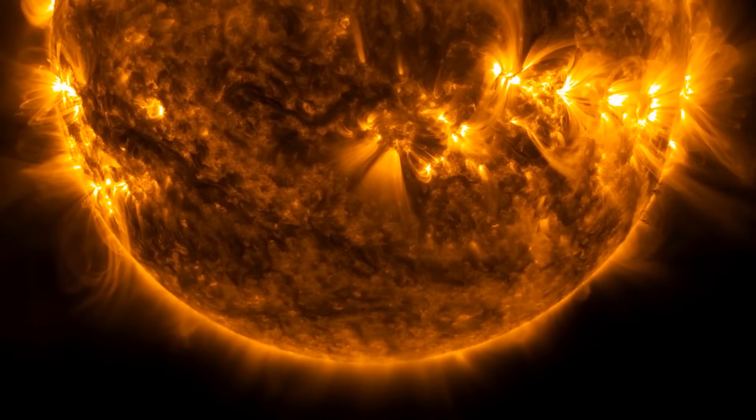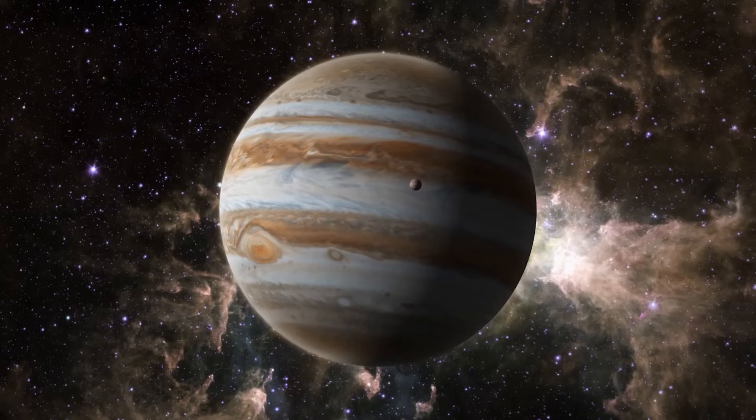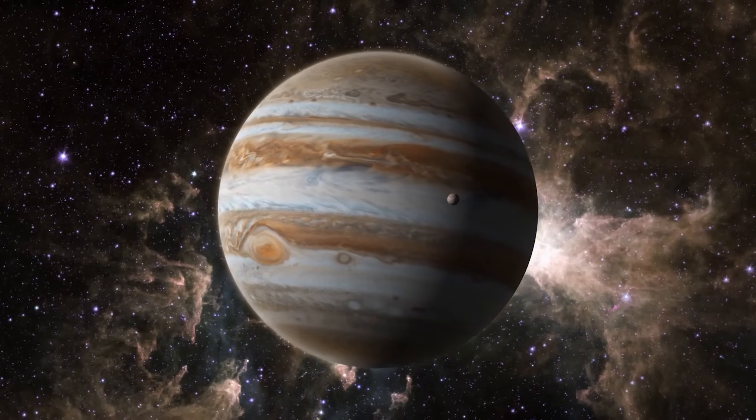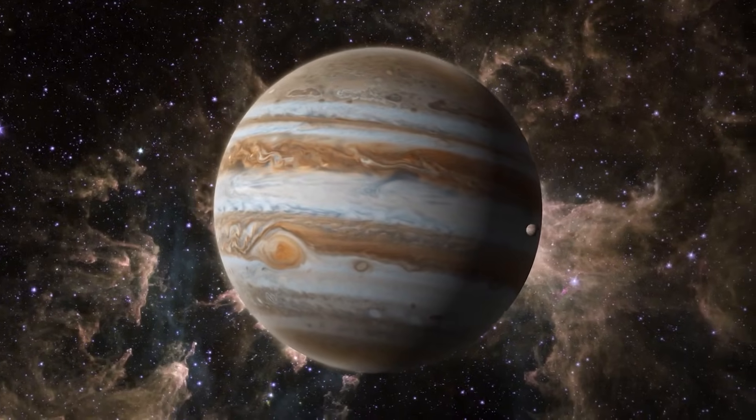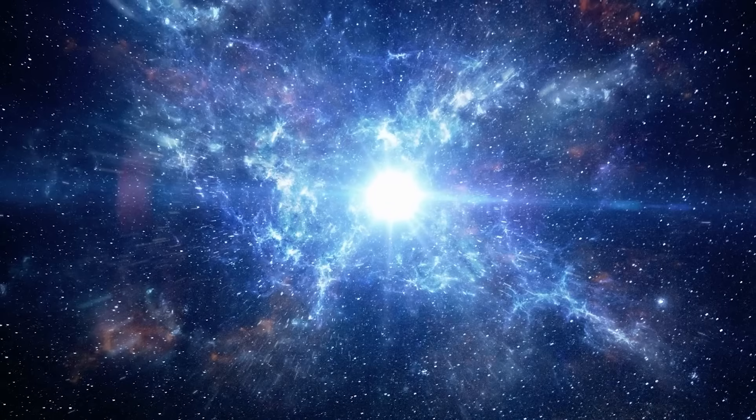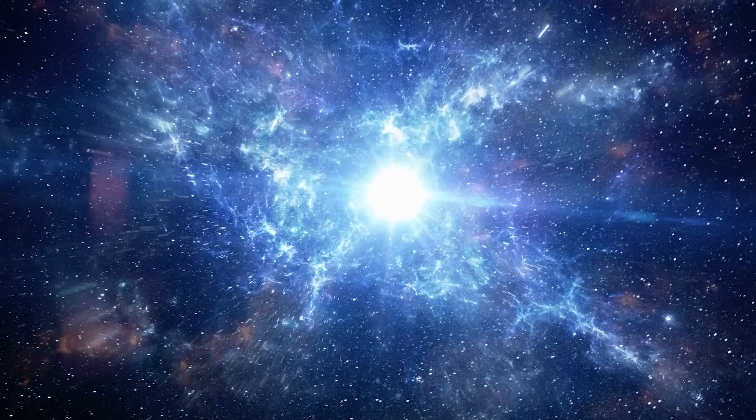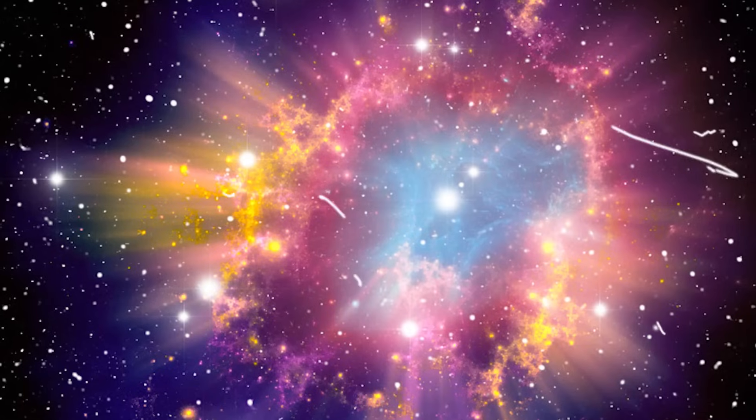It's an absolute giant. Its diameter is a staggering 900 times larger than the Sun, and if we were to place it at the center of our solar system, its outer surface would extend far beyond the orbit of Jupiter. Massive stars like Betelgeuse have relatively short lifespans, and when they meet their cosmic end, it's explosive.